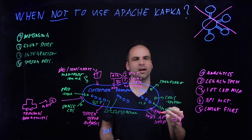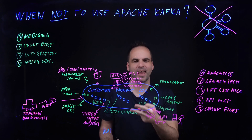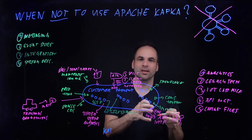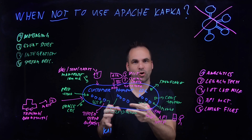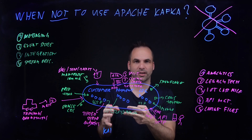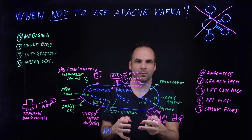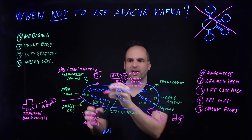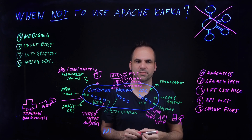We see the claim check pattern used a lot. For example, large architectures like Netflix do this — they don't stream video files through Kafka; they use a content delivery network and a complex architecture. But all the metadata is shared via Kafka between their different systems.